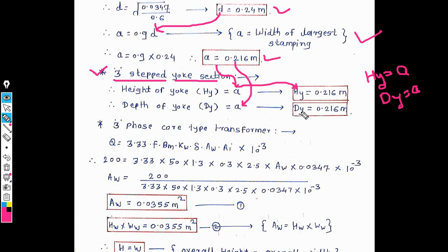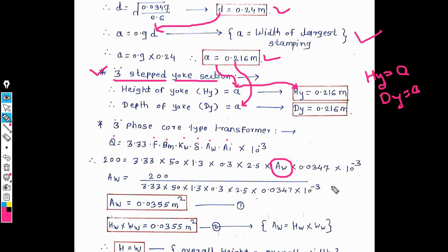The output equation for the three-phase core-type transformer is: Q = 3.33 × f × Bm × Kw × sigma × Aw × Ai × 10⁻³, where Q is rating, f is frequency, Bm is maximum flux density, Kw is window space factor, sigma is current density, Aw is area of window, and Ai is net iron area. Substituting all known values and rearranging for Aw gives Aw = 0.0355 m².